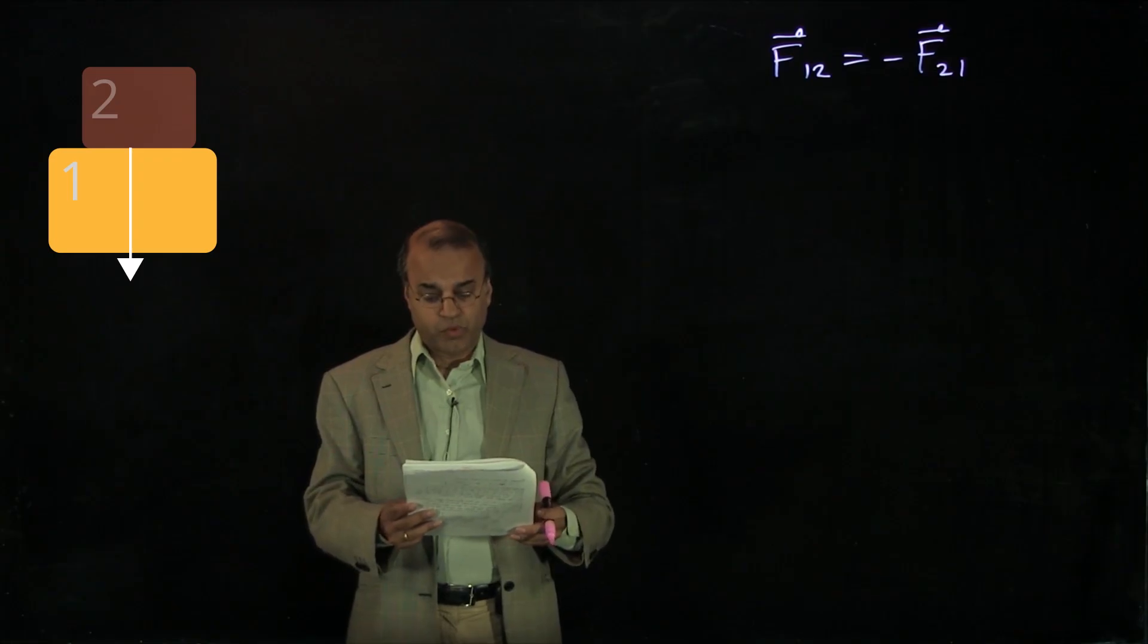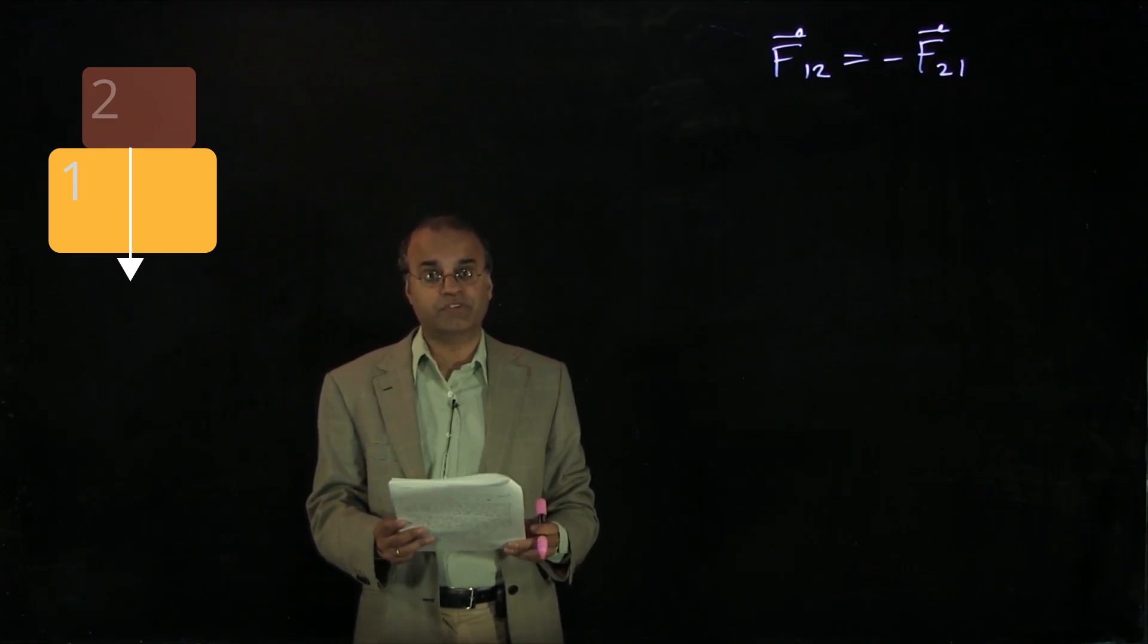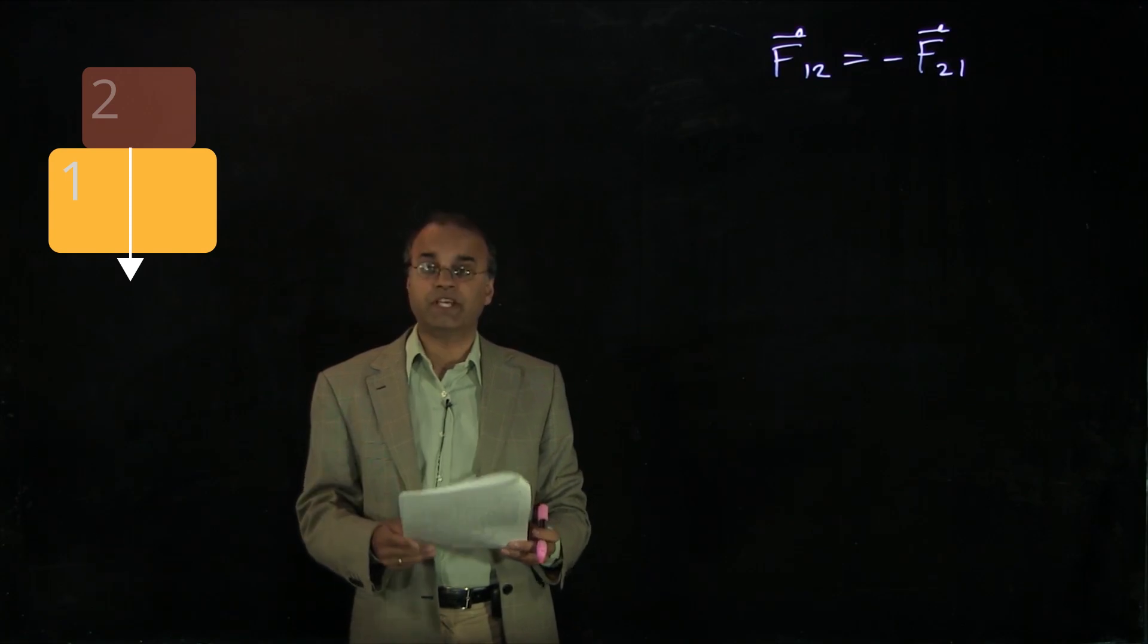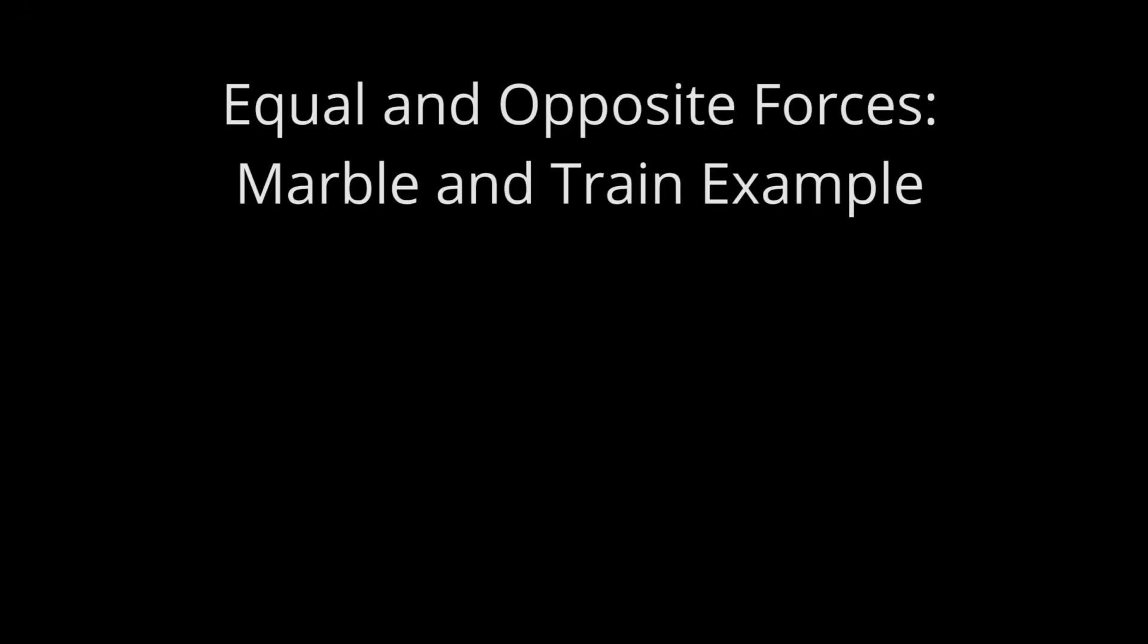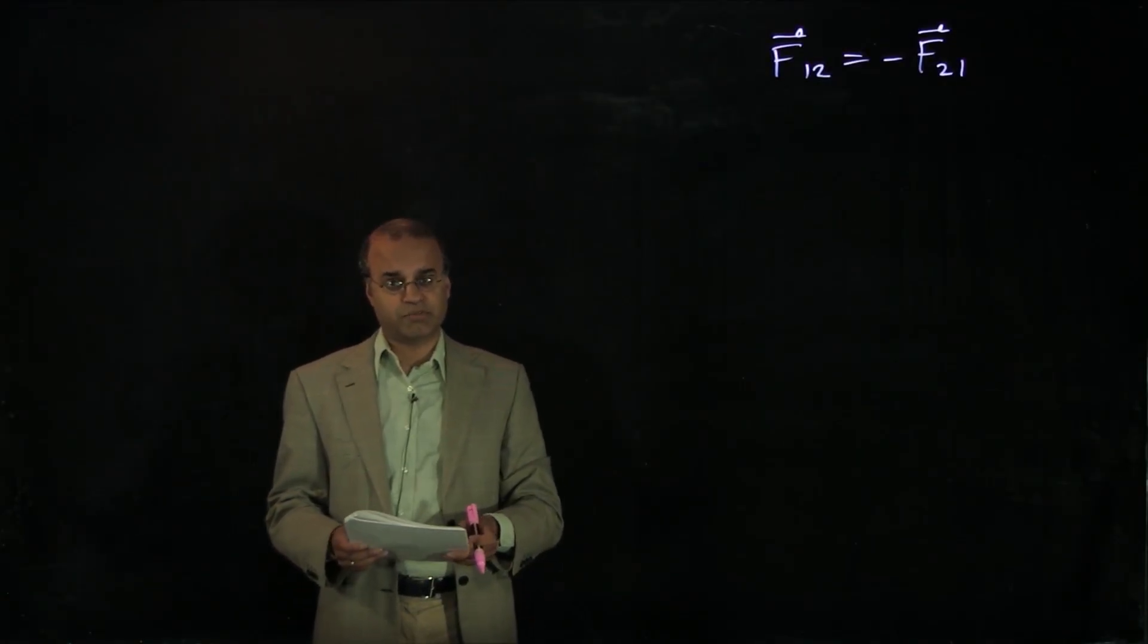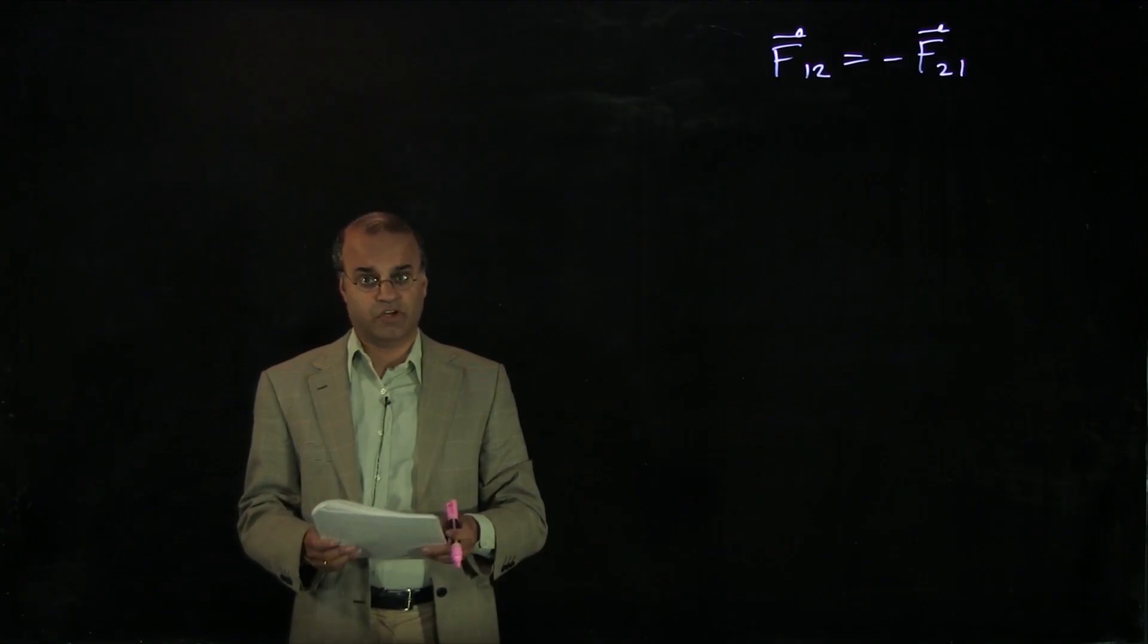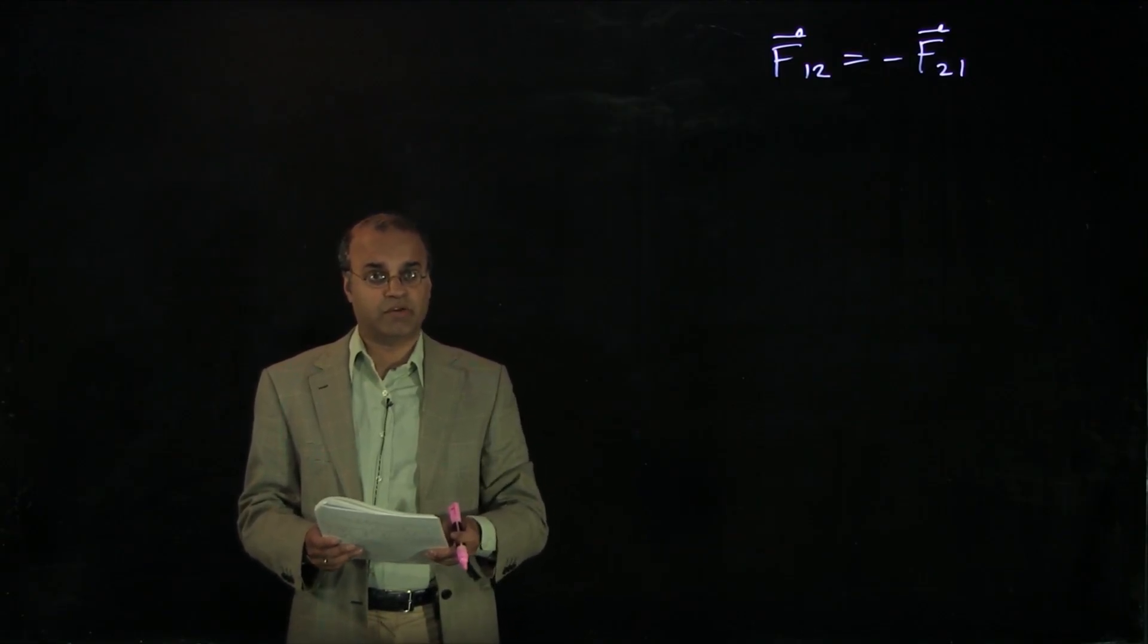This makes explicit that real forces always arise from a physical interaction. For any force in a problem, you should always be able to identify the other member of the interaction pair. Newton's third law is the most subtle and sometimes the most confusing of his three laws of motion, so I'd like to do an example that will help clarify how to think about it.